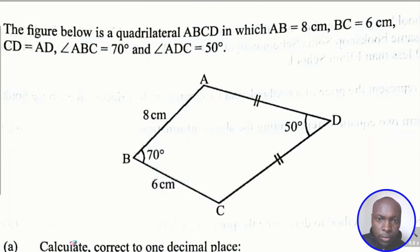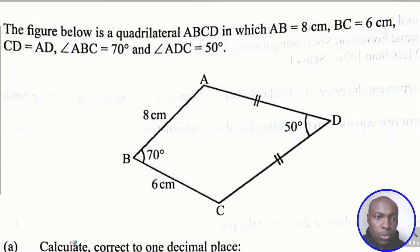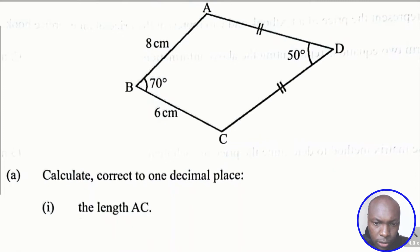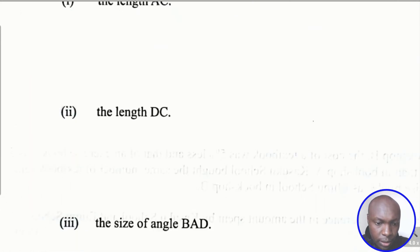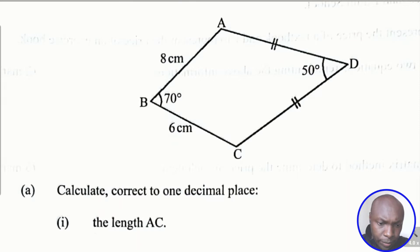The figure below is a quadrilateral ABCD in which AB equals 8 centimeters, BC equals 6 centimeters, CD equals AD, angle ABC is 70 degrees, and angle ADC is 50 degrees. There are three questions to answer: calculate correct to one decimal place the length of AC, the length of DC, and angle BAD.